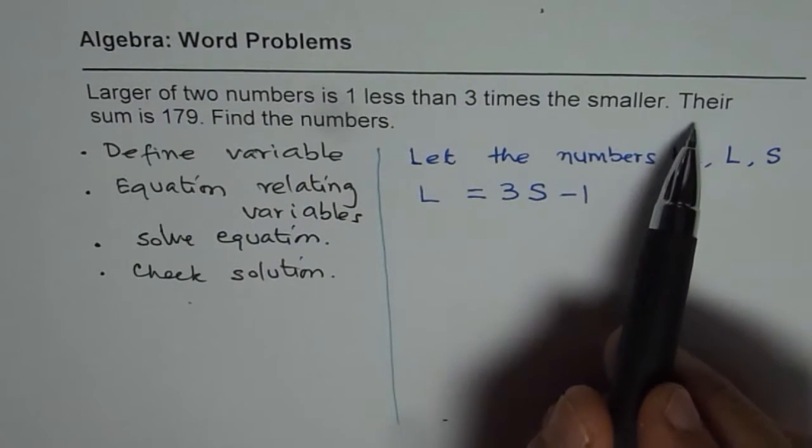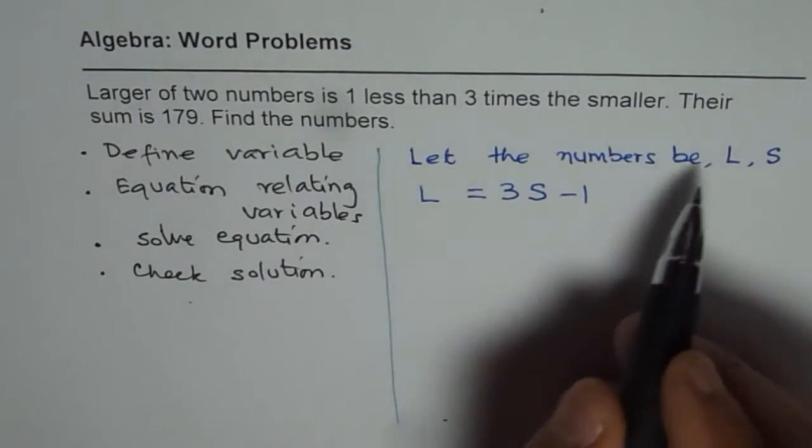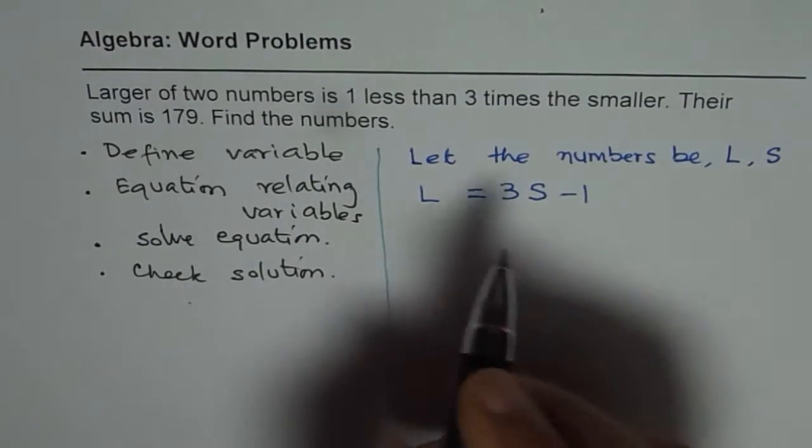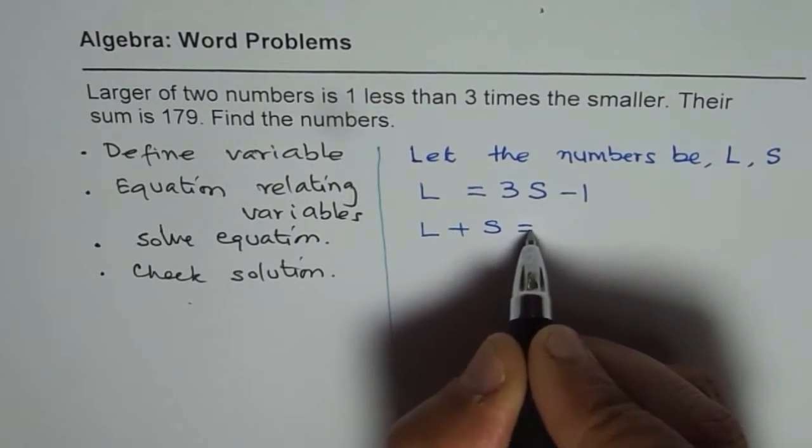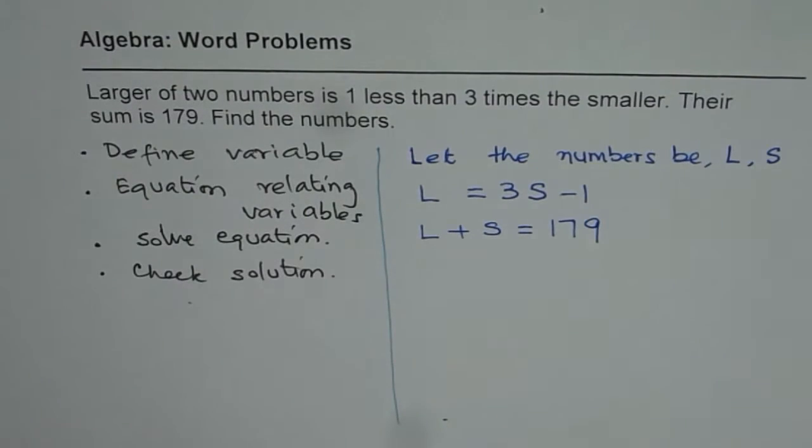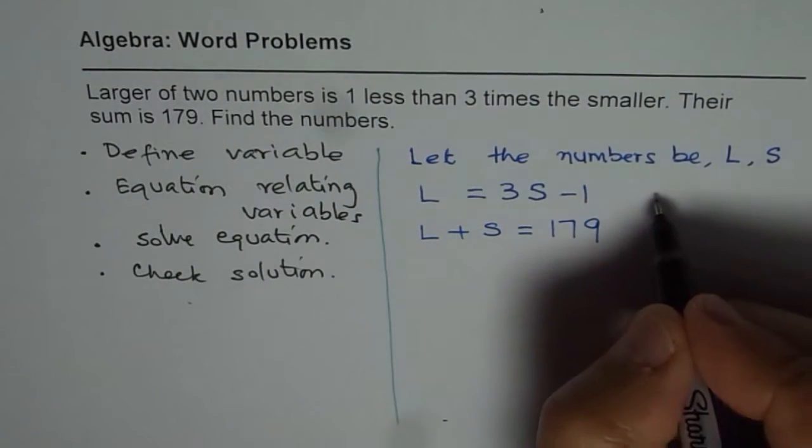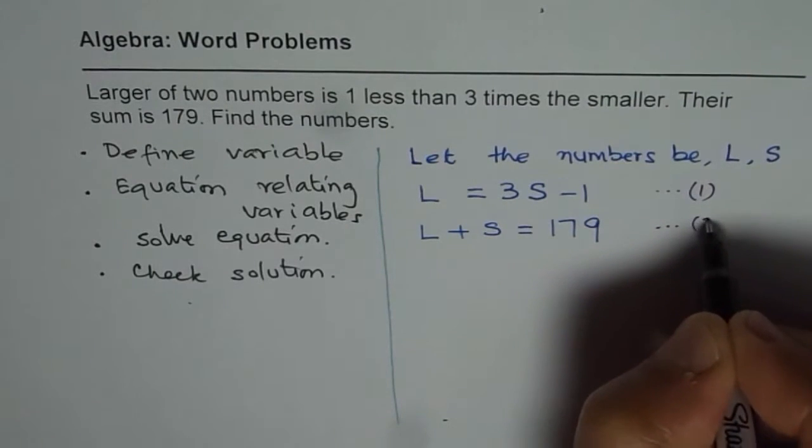Next statement is: their sum is 179. Their sum means L + S, so we have L + S = 179. What we get here is a set of equations. Let's number them. This is equation one, this is equation two.